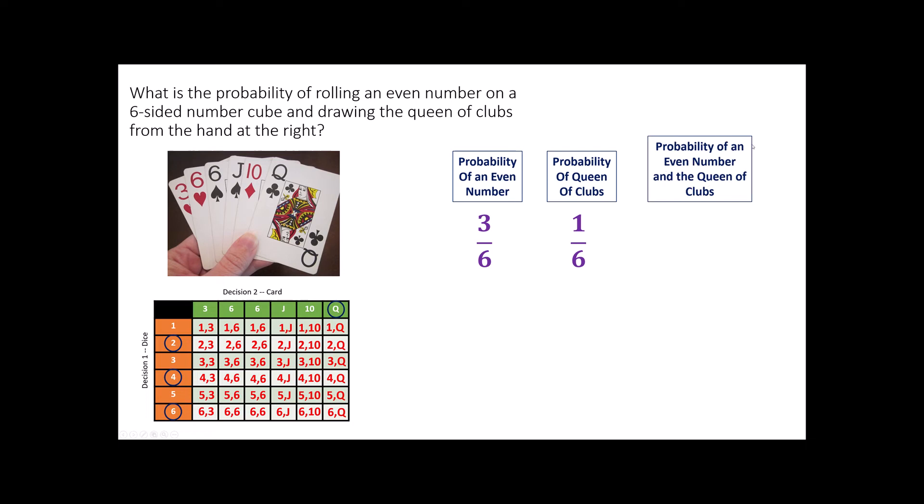So the probability then of both of those things occurring, of rolling the die and getting an even number, and then reaching into the hand of cards and drawing out the queen of clubs, I could look over here at all these different possibilities and look for anywhere I have an even number matched to the queen of clubs. There's a 2, that's even, and a queen. A 4, that's even, and a queen. A 6, that's even, and a queen. So, 3 of my 36 choices are even numbers matched to the queen of clubs.